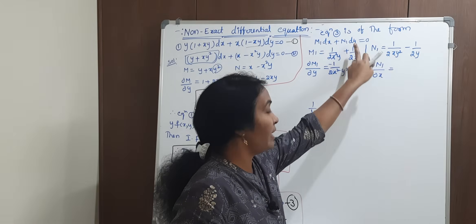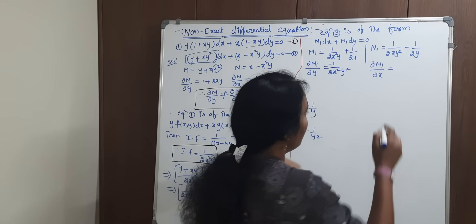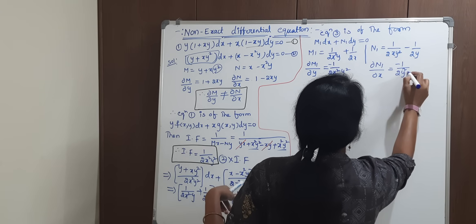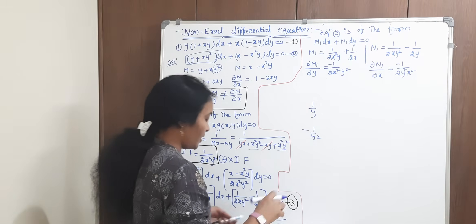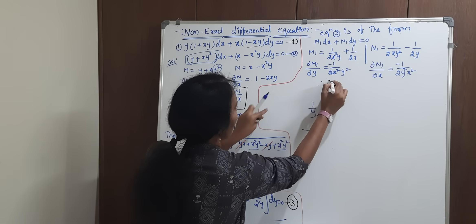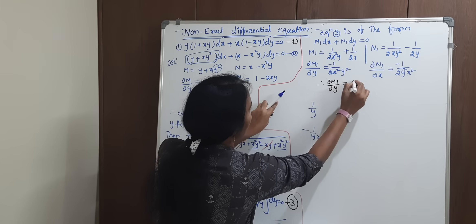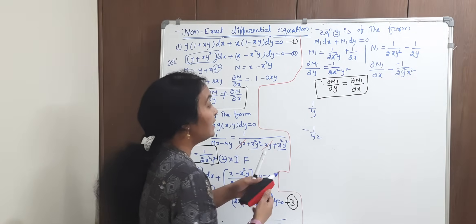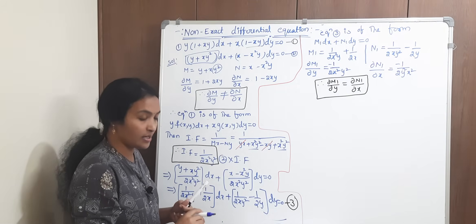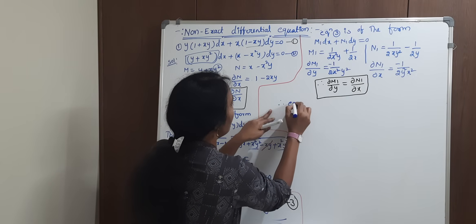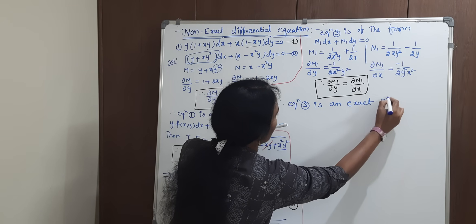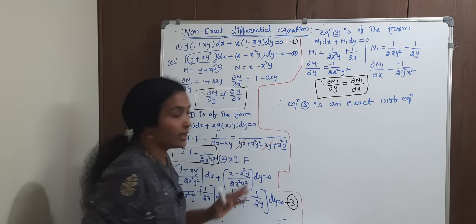Now compute ∂N1/∂x. For 1 by 2xy², differentiating with respect to x: y is constant, and 1 by x differentiates to minus 1 by x², giving minus 1 by 2x²y². For the term minus 1 by 2y, x is absent so it contributes 0. Therefore ∂N1/∂x also equals minus 1 by 2x²y². Since ∂M1/∂y equals ∂N1/∂x, equation 3 is an exact differential equation.